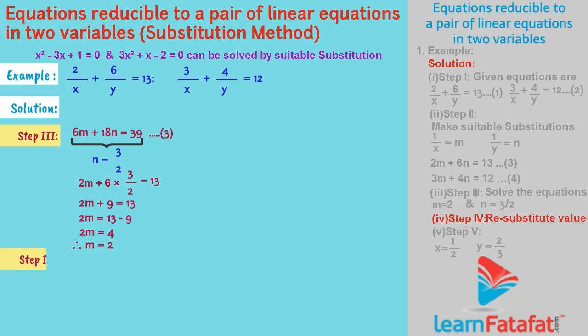Step 4: Resubstitute values of m and n to get x and y. Since 1 upon x is equal to m, therefore x is equal to 1 upon m is equal to 1 upon 2.